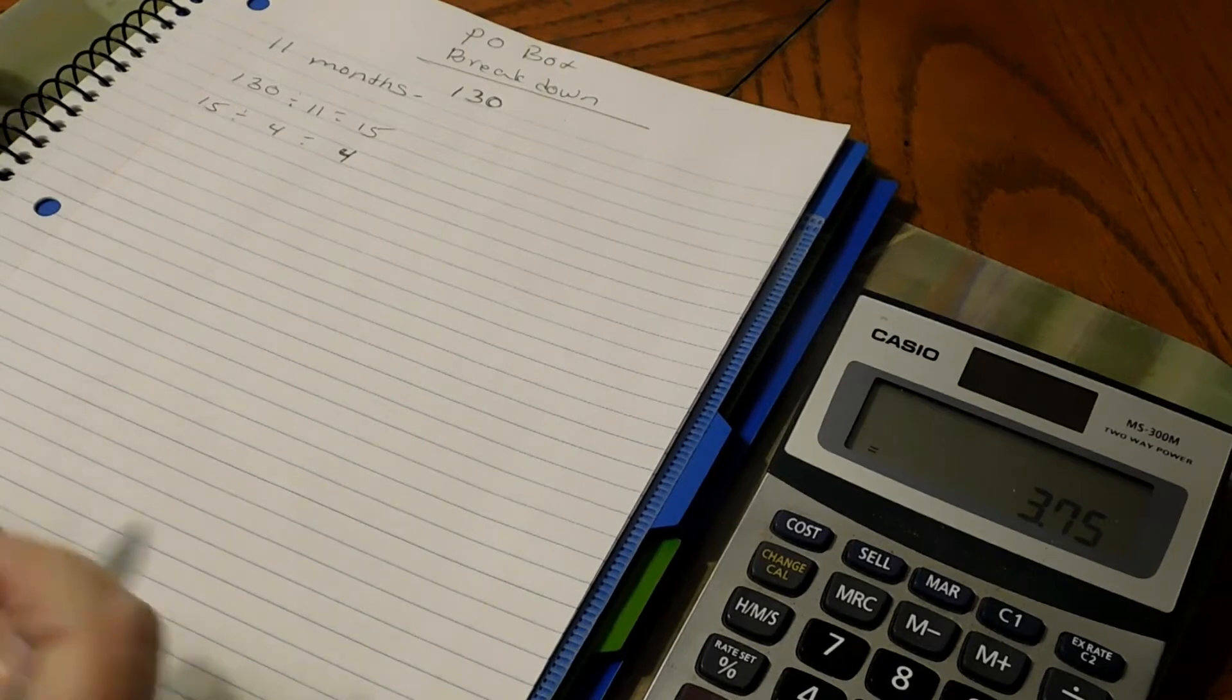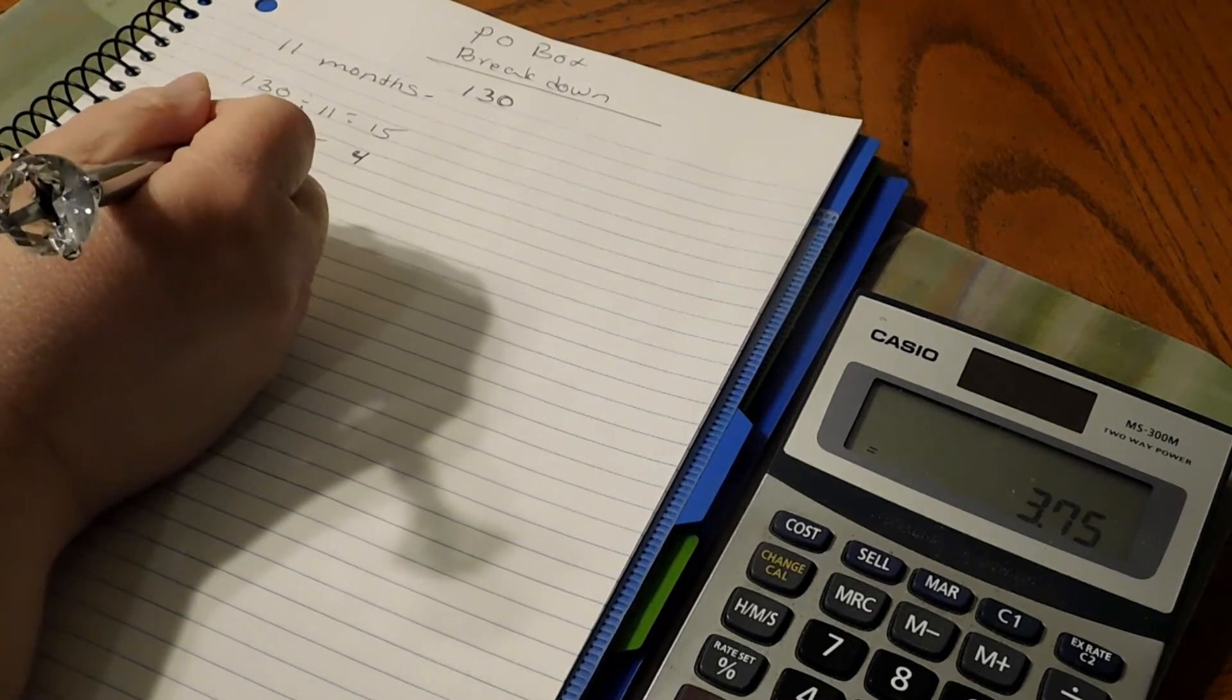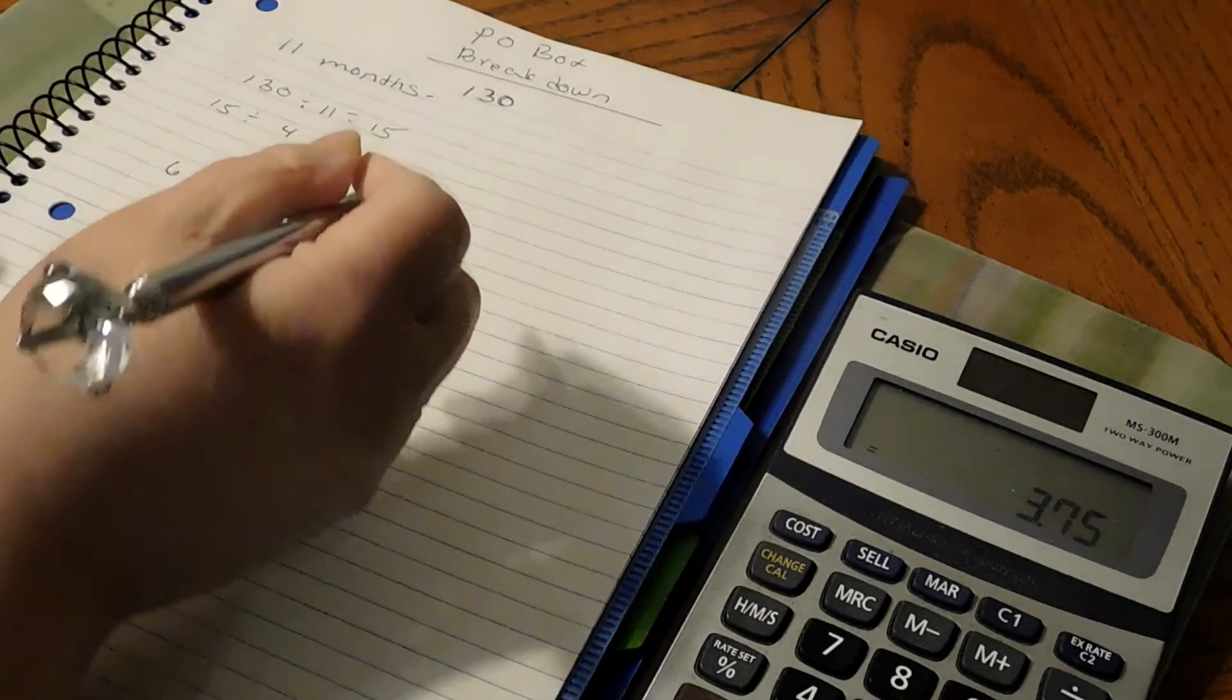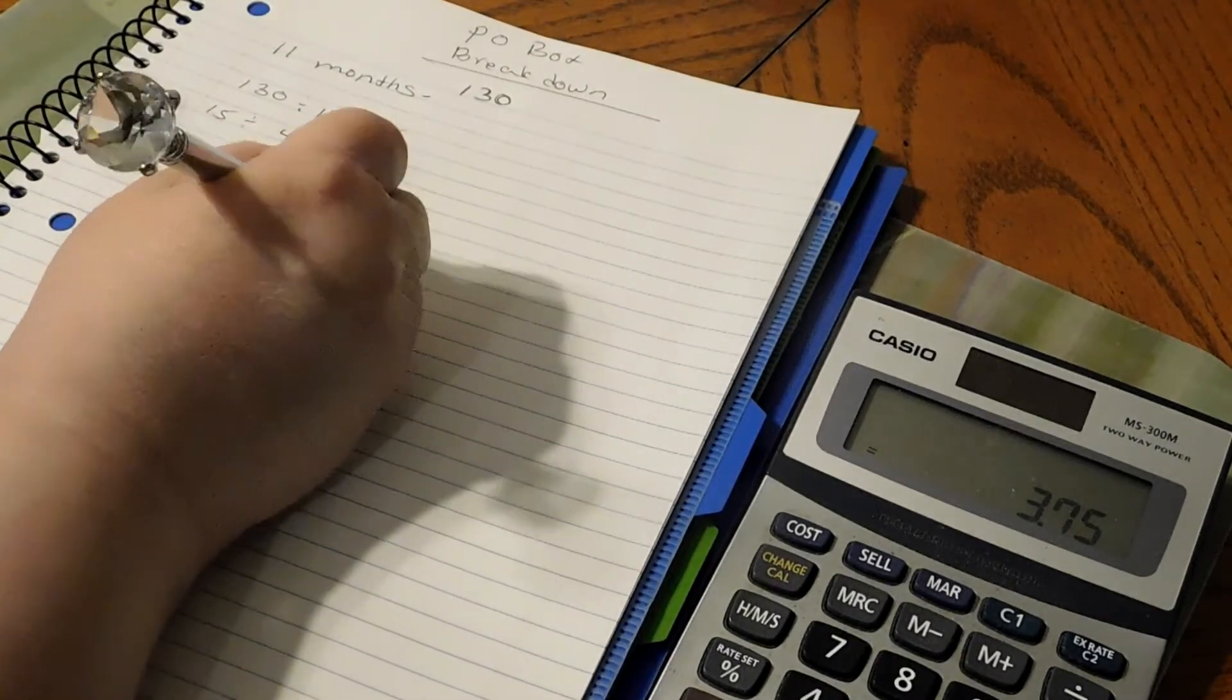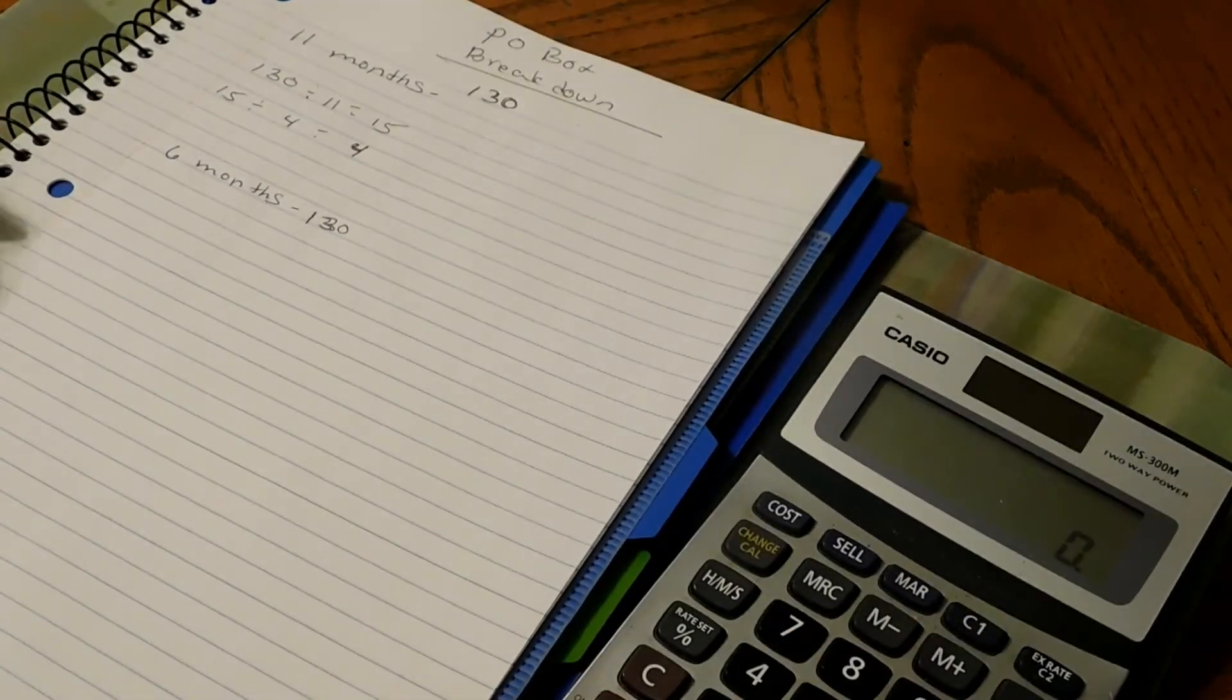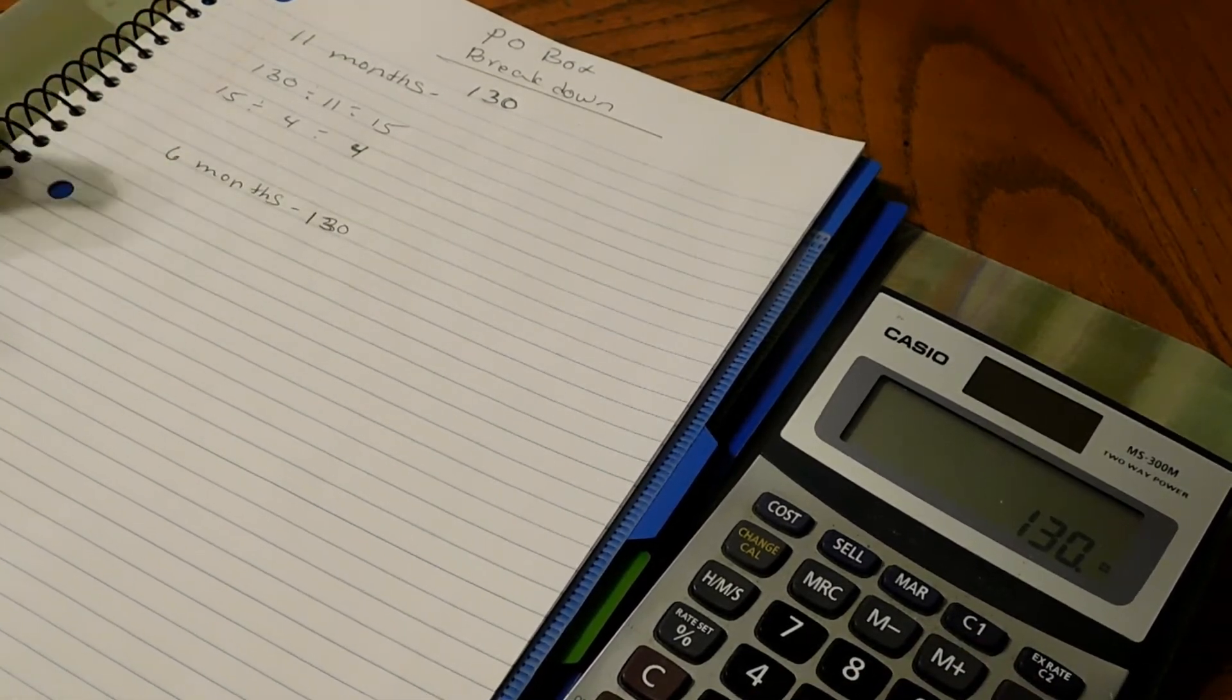Now if you want to do it for 26 weeks, then we would have to go 26 weeks would be six months. So six months, I'll break them both down. That's still going to come out, we're still going to say $130 for the six months. So we're going to go $130 and we're going to divide that by five because you have to pay it in November.